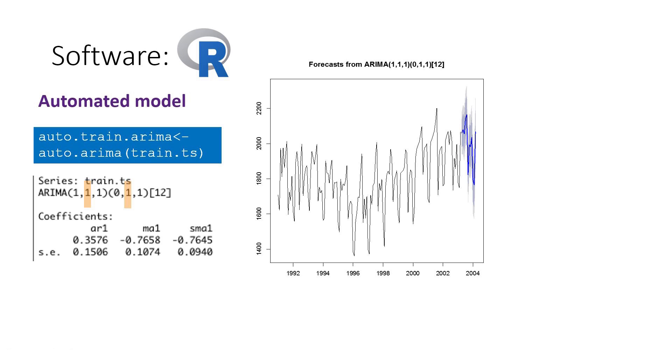This means that the series was differenced once at lag 1 and once at lag 12. After the differencing, the model includes y sub t minus 1 and e sub t minus 1 and a seasonal lag 12 error term.